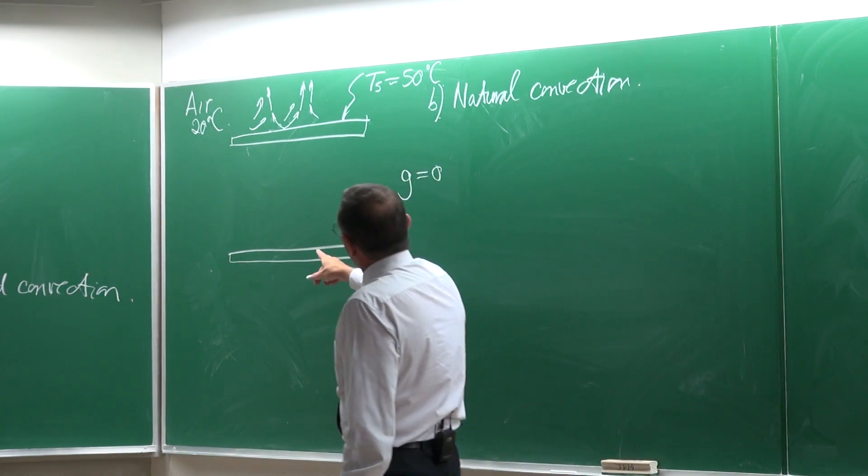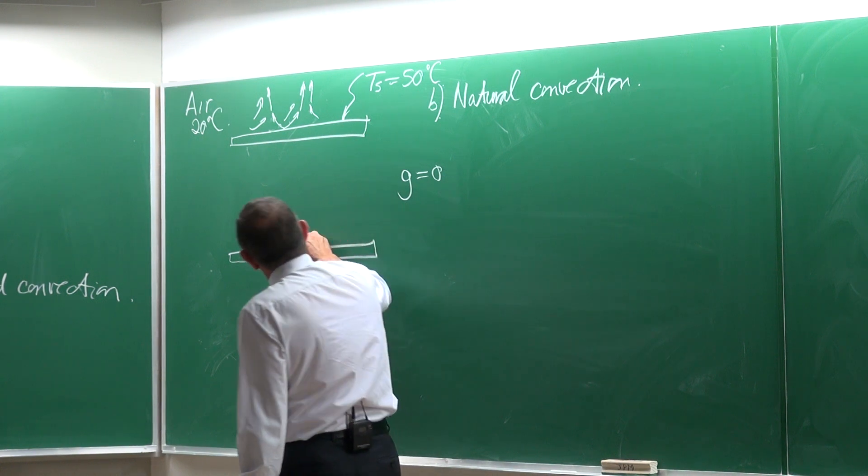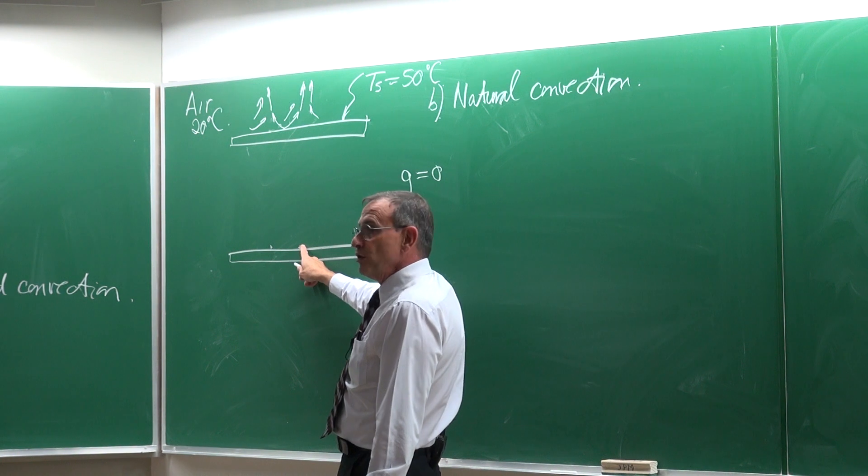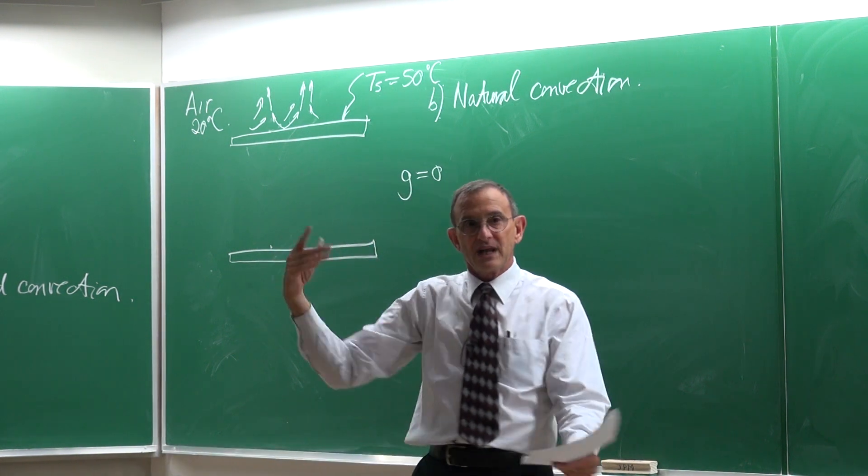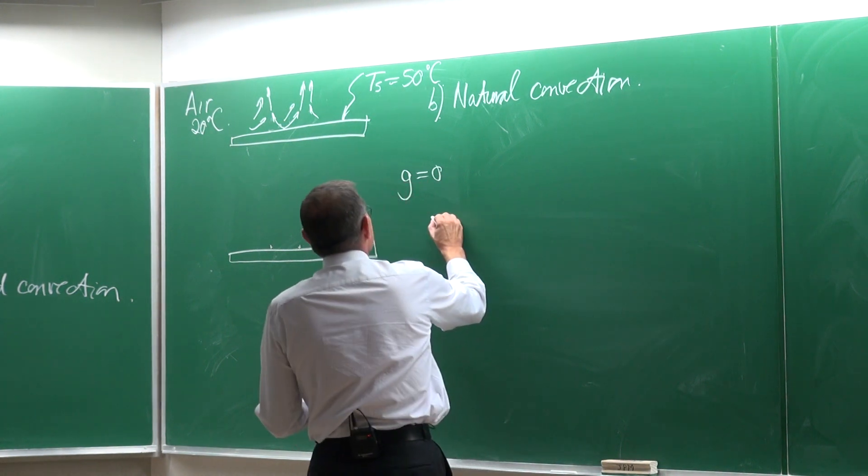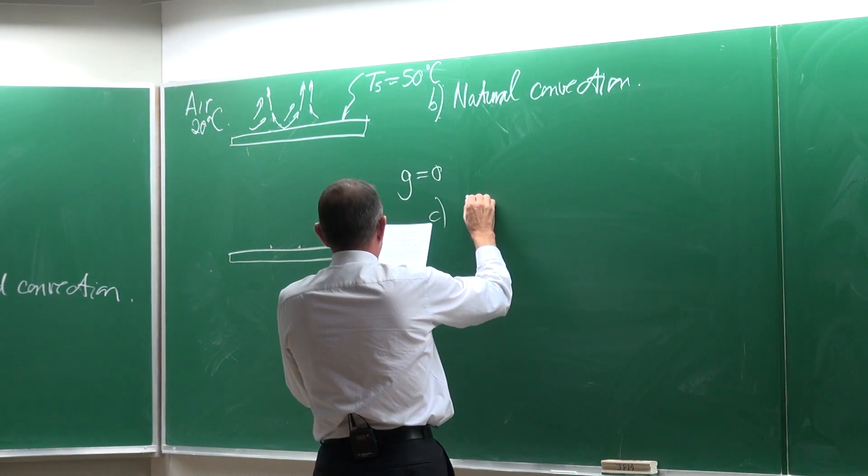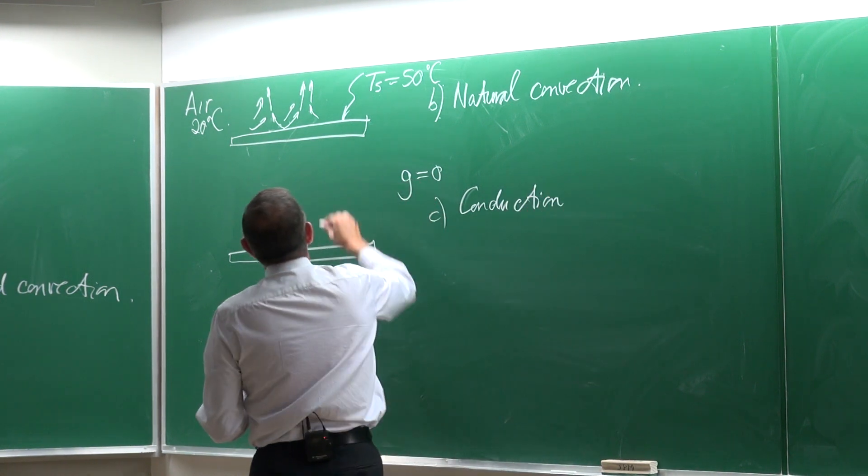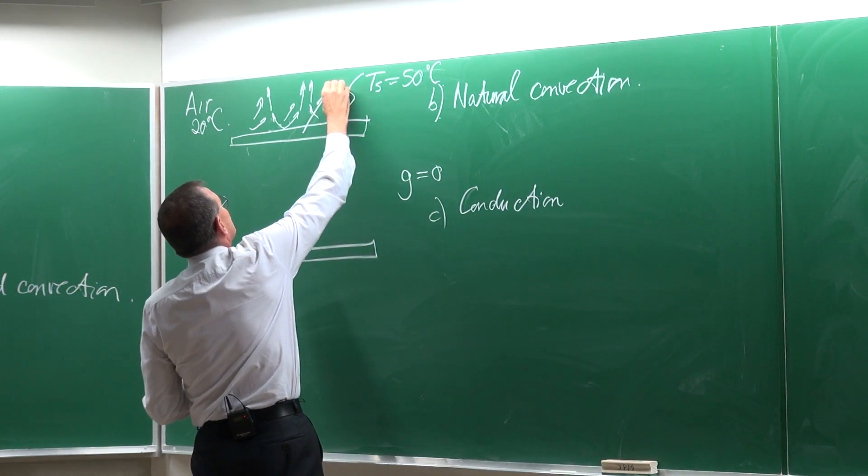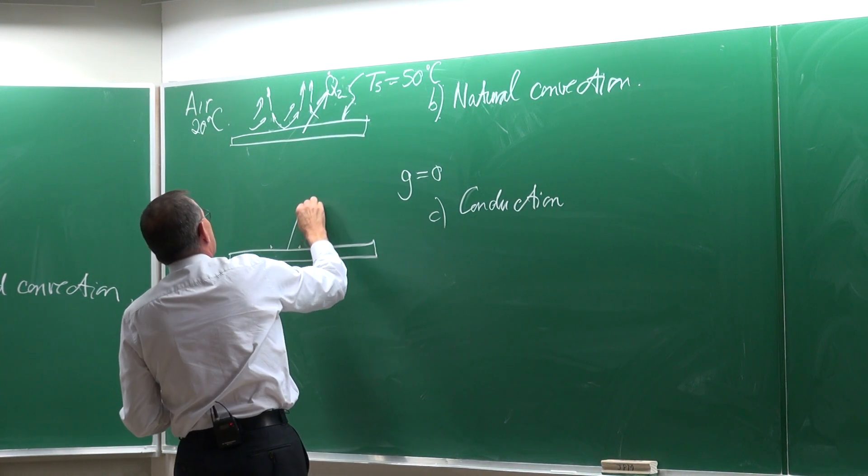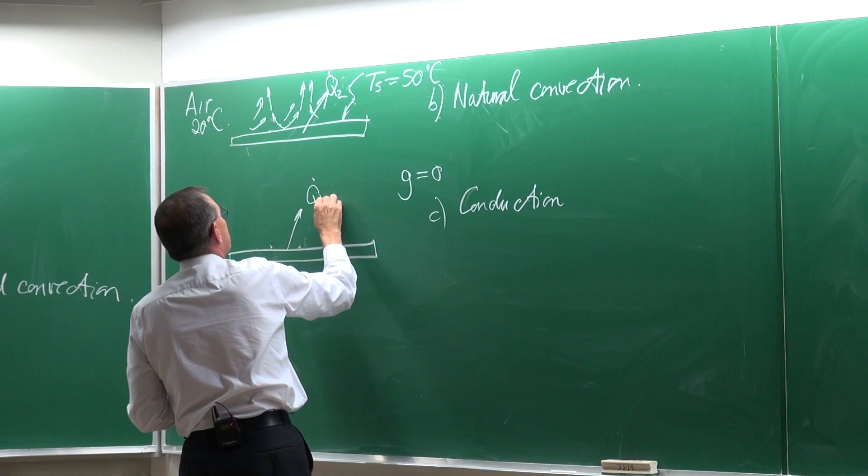So although the fluid, the air will be heated there, the buoyancy forces can't force it upward. And in this case it would be conduction heat transfer. So that would be Q2, the heat transfer rate 2 and that would be the heat transfer rate 3.